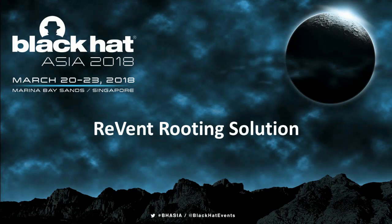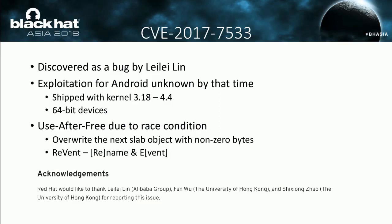Let me detail the first rooting solution, Revent. Revent is based on CVE-2016-7533, a vulnerability discussed as a bug by my colleague Lin Lele in another department. The public disclosure was released in August last year. Most Android devices ship with kernel 3.18 to 4.4, so this vulnerability does impact Android. It's a use-after-free vulnerability due to a race condition. When winning the race, some data of the last slab object can be overwritten. Since it's associated with the rename and inotify notification event syscalls, this rooting solution is named Revent.